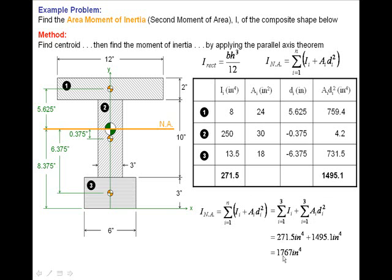Substituting in our values then, we end up with a moment of inertia for this composite shape of seventeen hundred and sixty-seven inches to the fourth.